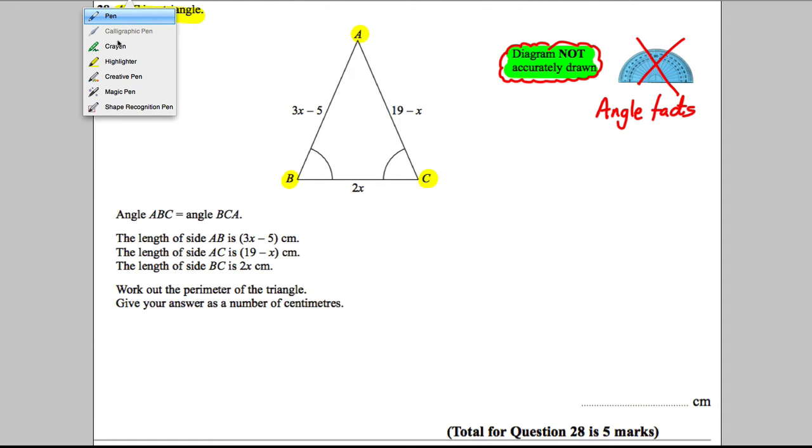So let's keep reading the question. What we've got is angle ABC, and that means as I go from A to B to C, the angle at B. So this angle here. It tells you that that is equal to angle BCA. So as I go from B to C to A, the angle at C. So these two are equal.